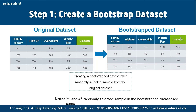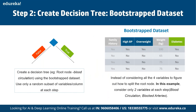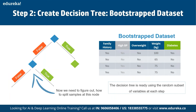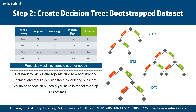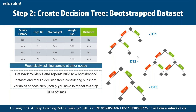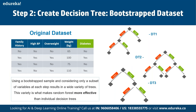Next, we create a decision tree using the bootstrap data set. For example, we set the root node as blood circulation. Instead of considering all four variables to determine how to split, we consider only two variables at each step — such as blood circulation and blocked arteries — and figure out which best separates the samples. We repeat this process for each branch node. Ideally, this process is repeated hundreds of times to build many decision trees using bootstrap samples and subsets of variables.